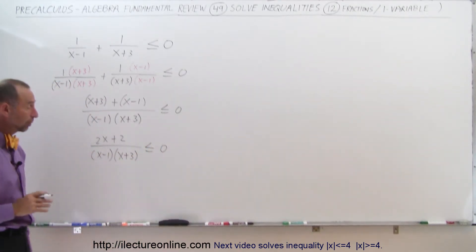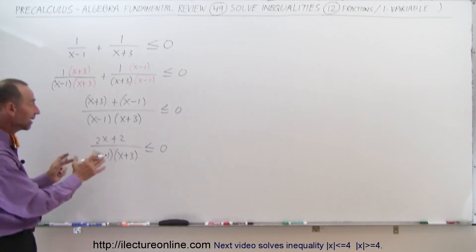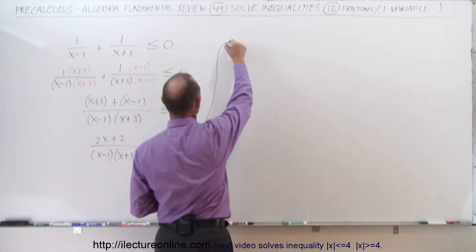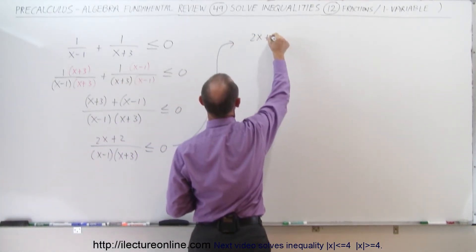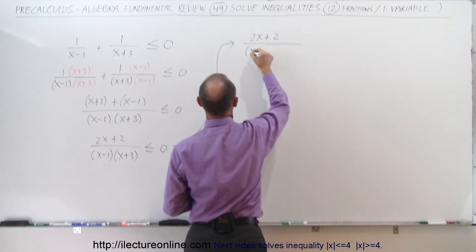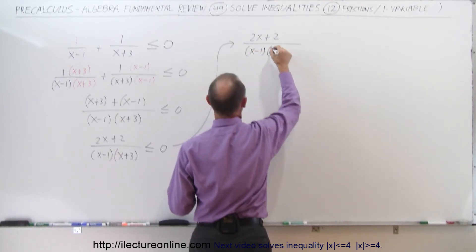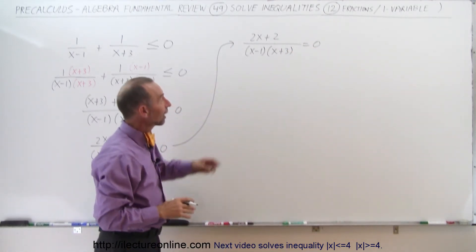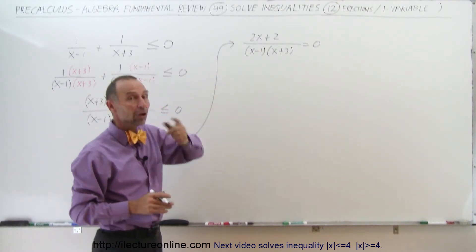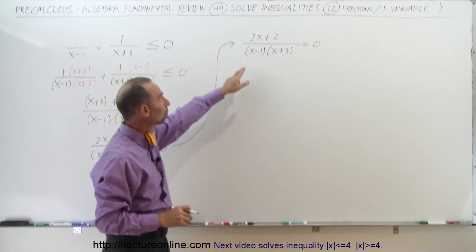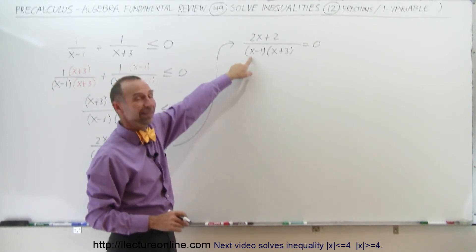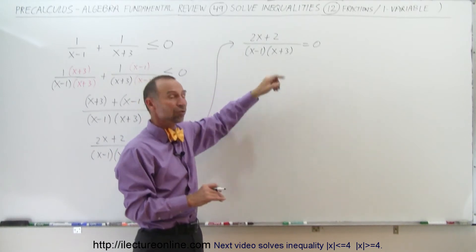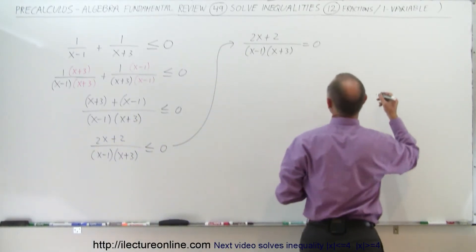Now we're ready to find the critical points. We're going to write this as an equation by changing the inequality symbol to an equal sign. So we have (2x plus 2) divided by (x minus 1)(x plus 3), set equal to zero. We find all values for x that satisfy that equation, and all values that x cannot be. Notice we have two products in the denominator: if x equals 1, that gives us a zero denominator, and when x equals negative 3, that also gives us a zero denominator, making it undefined.